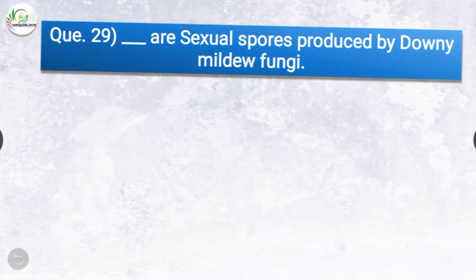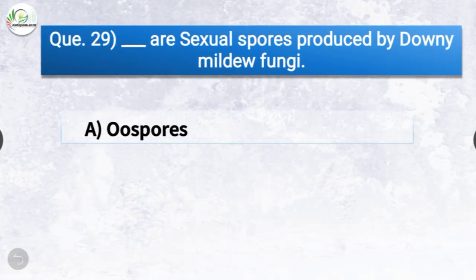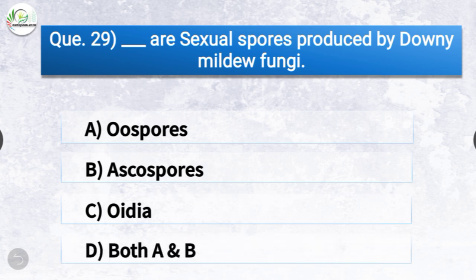Question number twenty-nine: Dash are sexual spores produced by downy mildew fungi. The options are oospores, ascospores, oidia, or both A and B. The correct answer is option A, oospores. Oospores are sexual spores produced by downy mildew fungi.